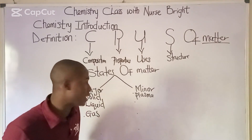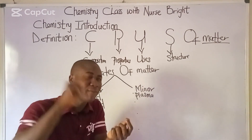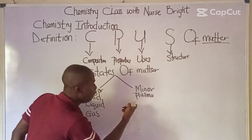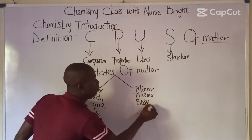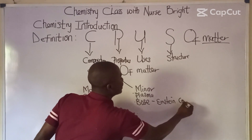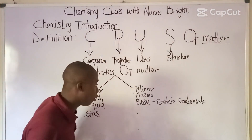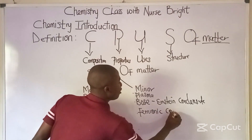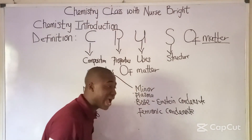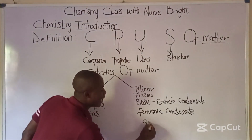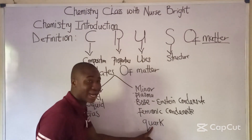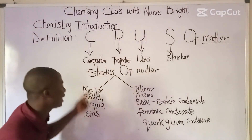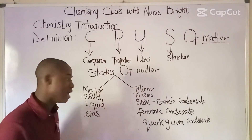The minor states of matter are four. The first is plasma — and this plasma is not the plasma found in blood; it is a state of matter. Next is the Bose-Einstein condensate, then the Fermi-Ionic condensate, and lastly the quark-gluon condensate. These are all the major and minor states of matter.